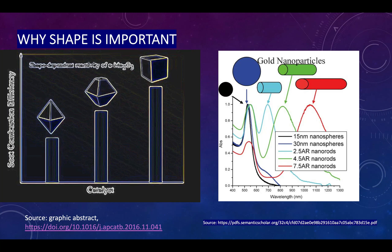Why is shape important? The answer is clearly shown in these pictures. On the left-hand side, the picture shows the efficiency of a catalyst — manganese oxide — and its efficiency based on shape. The cube shape has the highest efficiency in this figure, followed by the second and third shapes. So nanomaterials in the same size region can differ: their catalytic activity also depends on shape, and cube-shaped particles have relatively higher catalytic activity in this case.